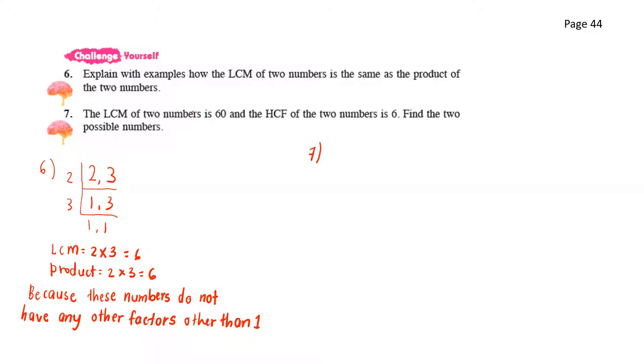Explain with examples how the LCM of two numbers is the same as the product of the two numbers. So here we have two numbers, I've taken 2 and 3 because they have no other smaller numbers. We'll find the LCM here. We have 2 times 3 gives us 6 and the product of these numbers also gives us 6. This is because these numbers have no other smaller factors other than 1.